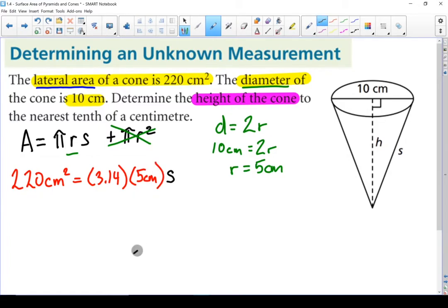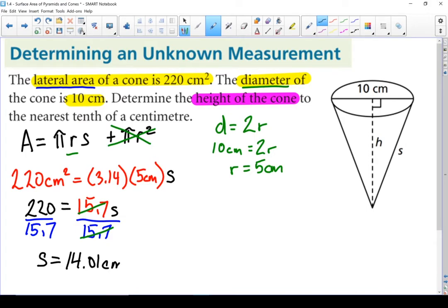Got one variable in there. Okay, 220 equals if I times 3.14 times 5 I get 15.7 and I still have that variable s. I'm going to isolate the s. I'm going to take both sides divide by 15.7. Those two will cancel each other out and I'm left with s equals 14.01 centimeters. And what I'm going to do from here is I'm going to actually use this triangle which is a right triangle and the Pythagorean theorem to find my height.